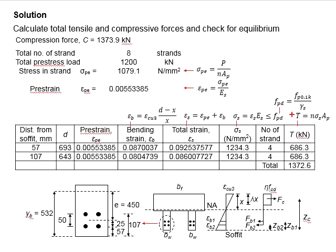The total tensile strength in the tendon is determined by the total number of tendons times the effective stress in the tendons times the area of the tendon. This effective stress in the tendon is determined by the total strain of the tendons times the modulus of elasticity of the tendon.